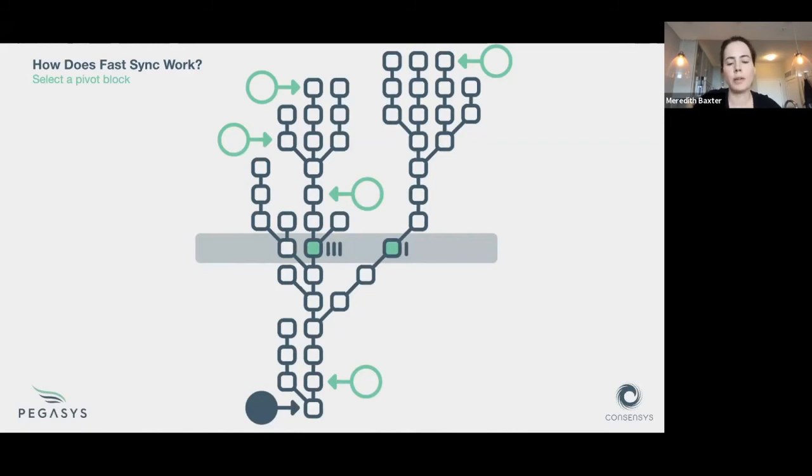We'll pick a pivot block that's some distance from the chain head. Let's say it's block 7 million, and we'll ask all of our peers, hey, what block do you have at block 7 million? Those responses will come back and we kind of tally those responses to get a vote on the pivot block. When we find a pivot block that has enough support, we'll select that. In this little cartoon I've got this little green highlighted block, three votes there, so we'll say that we're going to select that as our pivot block.